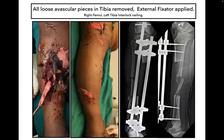He was treated initially with a femur interlocking nail on the right side and tibia with damage control debridement, and a conventional uniplanar external fixator was applied. As one can see here, the large bone piece was absolutely avascular and was removed without any difficulty.